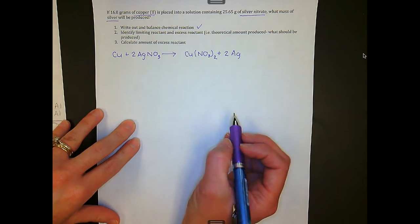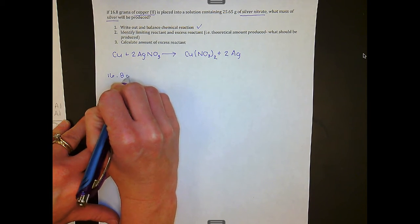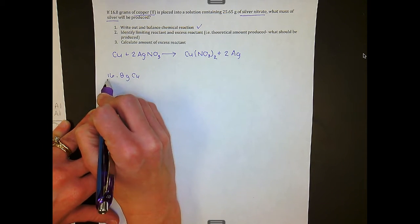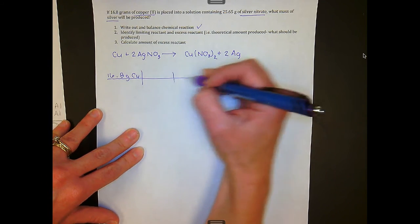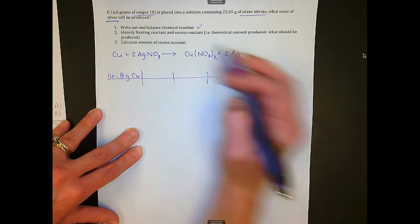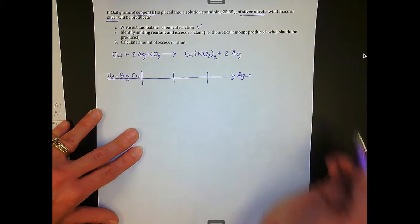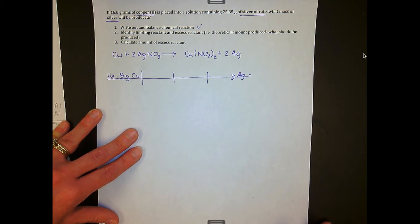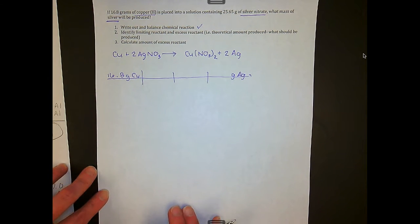We're going to start with our two T-charts. The problem states we have 16.8 grams of copper, and the question is: if 16.8 grams of copper reacted completely, what mass of silver would be produced? I'm trying to get to grams of silver. I would encourage you to pause the video and try setting up this mass-to-mass stoichiometry problem yourself.